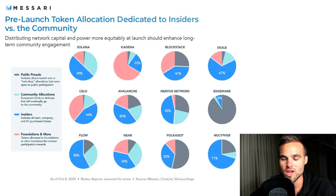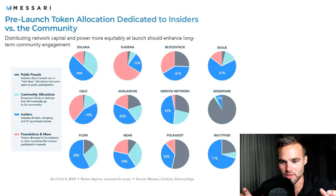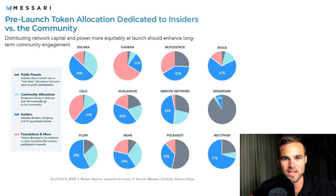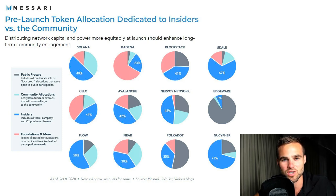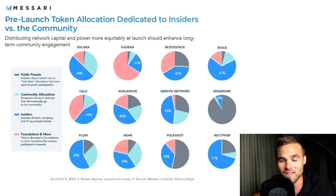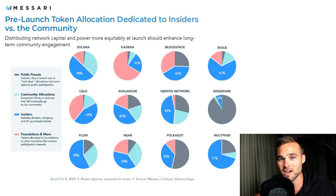The general rule of thumb is the less that's allocated to insiders, to the presale, to the team, or to VCs, the better. Think about this: VCs or the team get in at early prices — say they get in at 10 cents. When the token first comes to the market and it's worth a dollar, these guys are already up 10x. The chances of them dumping on you is likely, and if they all sell at the same time — which happens time and time again — this causes the price of the cryptocurrency to fall dramatically.